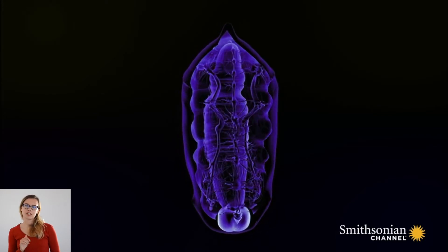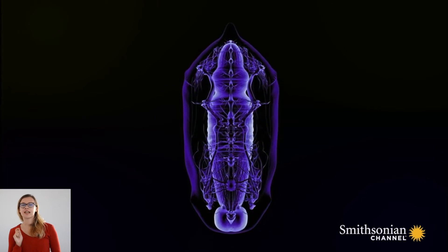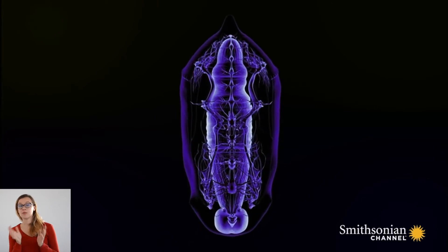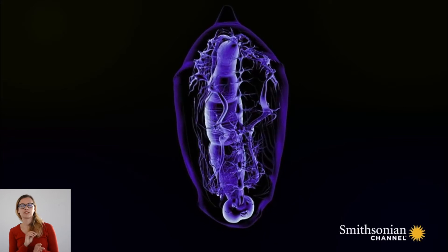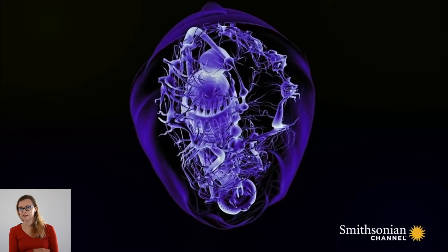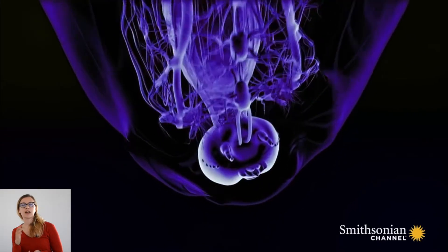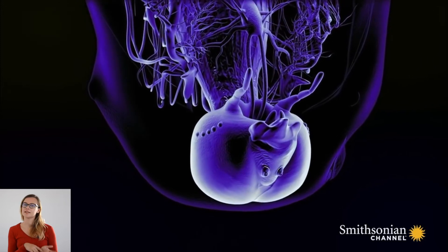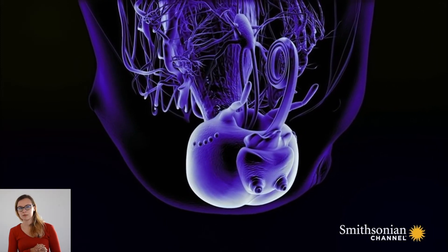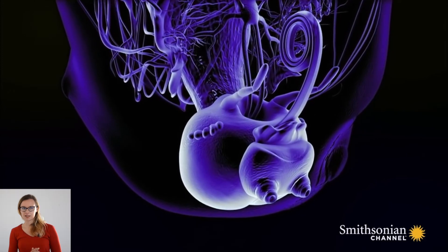During the transformation inside the pupa, the caterpillar becomes one shapeless thing with only some nerves and organs left. Little by little, butterfly head and wings are being formed, and finally the butterfly hatches.